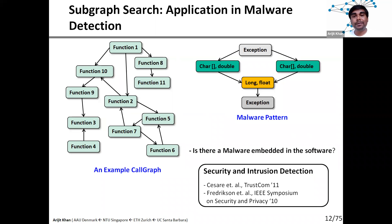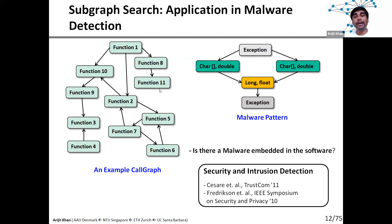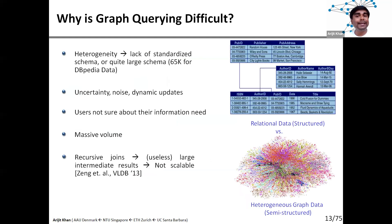Another application of graph search is malware detection. Given a software, one approach is to consider the call graph of the software — how control flows from one subroutine to another. Similarly, we can get a call graph of the malware, and then we need to detect whether the malware call graph is embedded inside the call graph of the original software. Graph search is clearly very important from various perspectives.